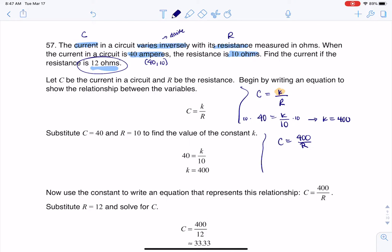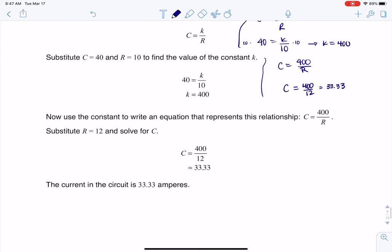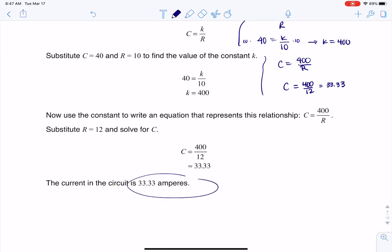No problem. So I'm going to say C is equal to 400 over 12. And when I go to my handy dandy calculator, I'm going to get about 33.33. And that's going to be my current. And that's why you see me saying that my current for this particular circuit is about 33 amps.